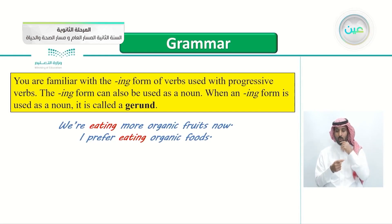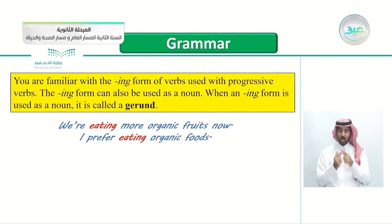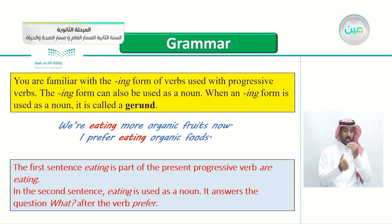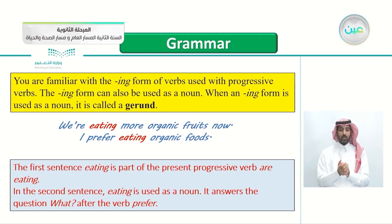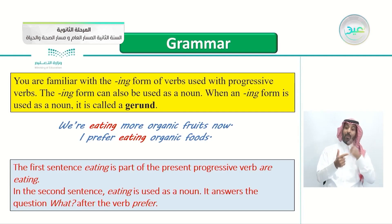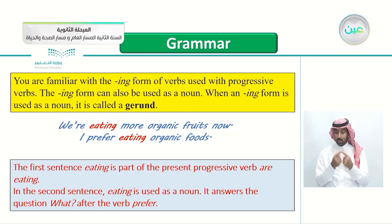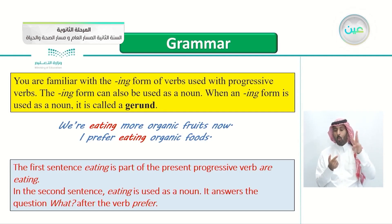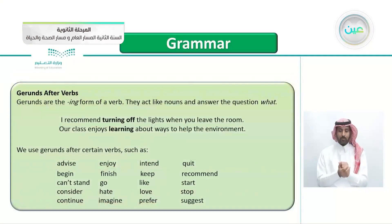For example: 'We're eating more organic fruits now' — here eating is part of the present progressive verb 'are eating', so it's a verb. But in 'I prefer eating organic foods', eating is used as a noun. It answers the question 'what?' after the verb prefer. That is a gerund.